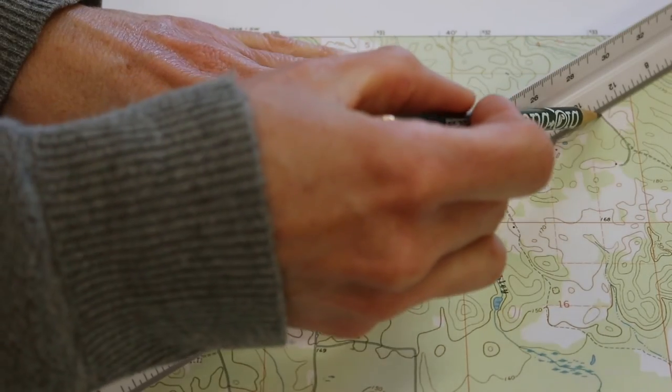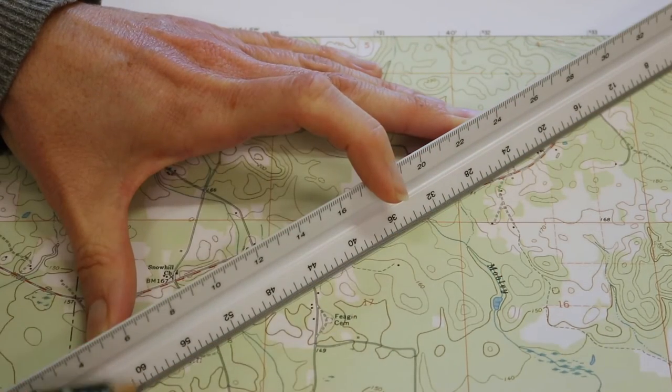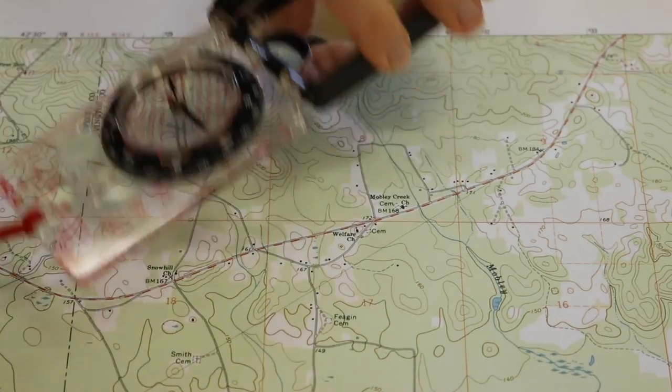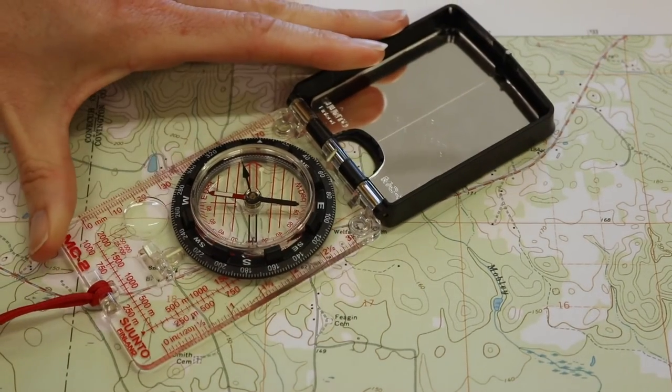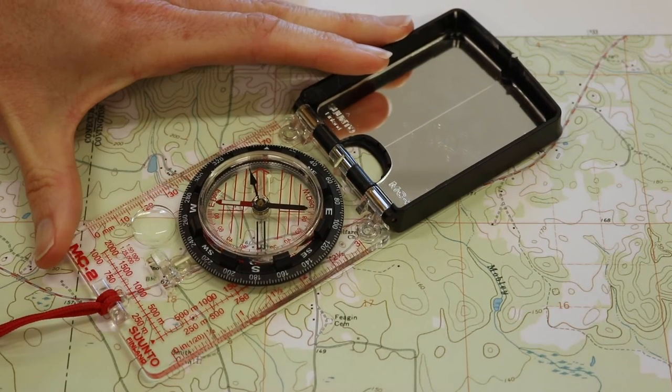If the distance is longer than your base plate, using a straight edge, draw a line between the two points and place your compass along that line. The compass should be pointing in the direction of your destination.